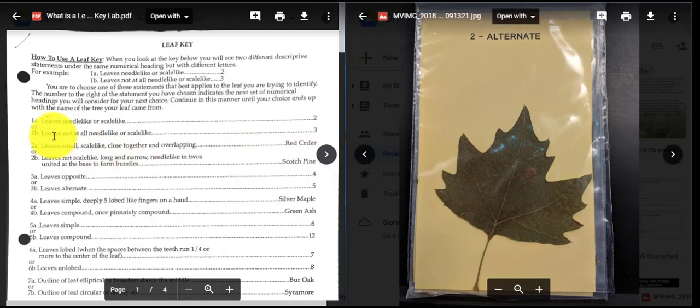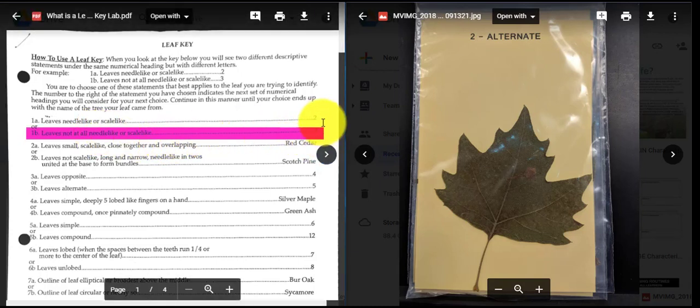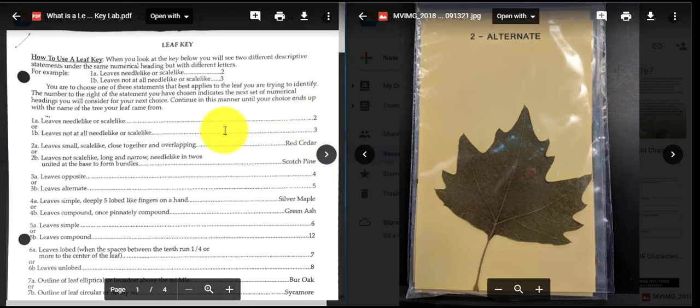Does this look like a leaf on your Christmas tree? If it does not, then it's not needle-like. So since it's not needle-like, it agrees with couplet number one B, so I'm going to move on over to the right and see what it tells me to do. Now it tells me to go to couplet number three. So I'm going to jump down to number three.